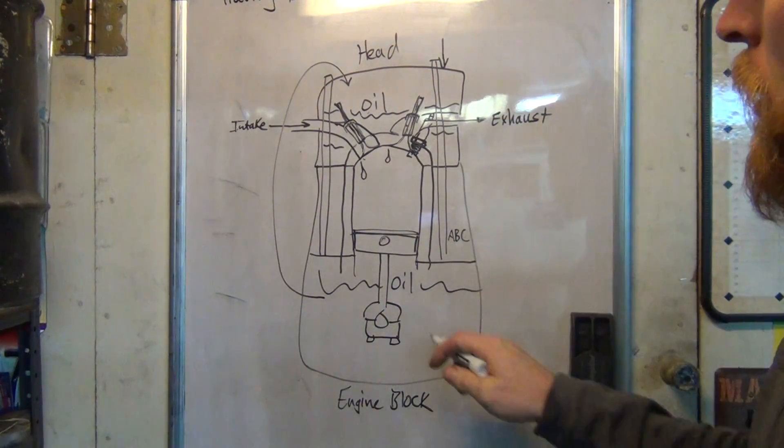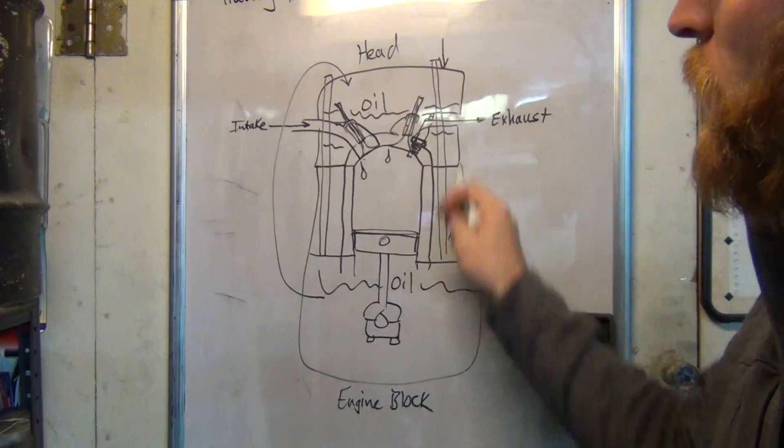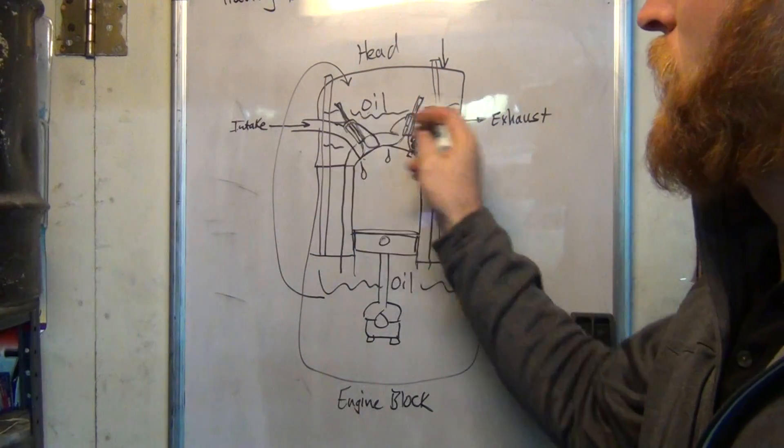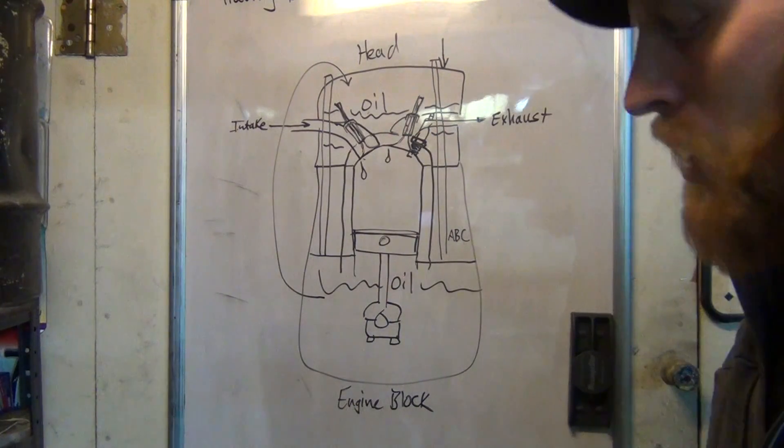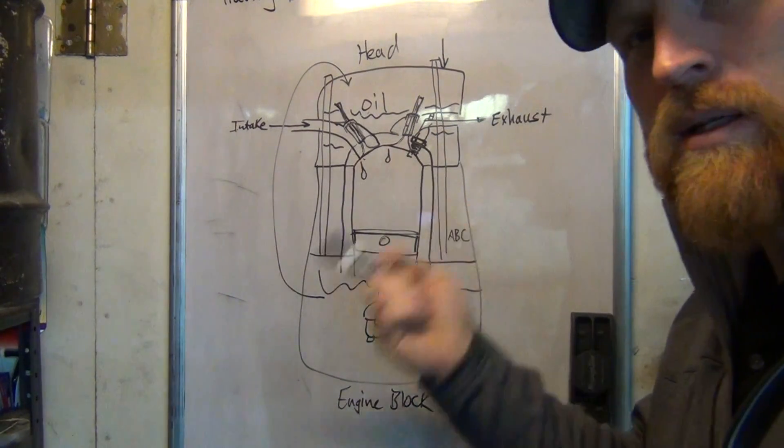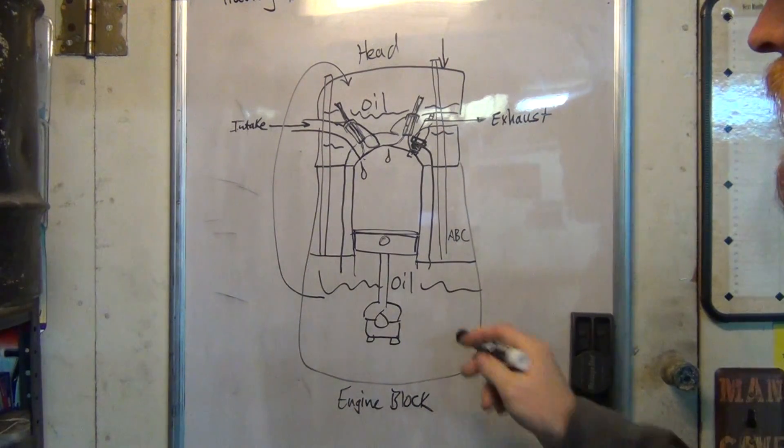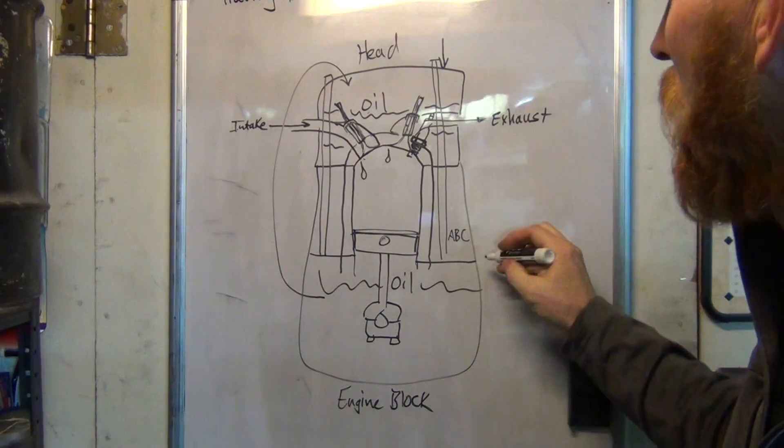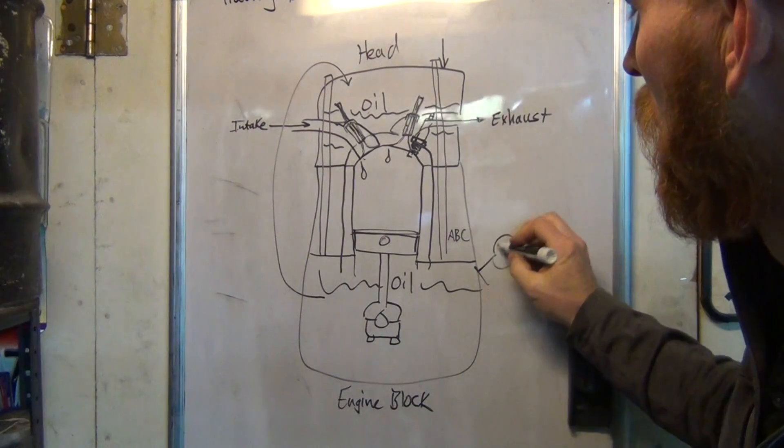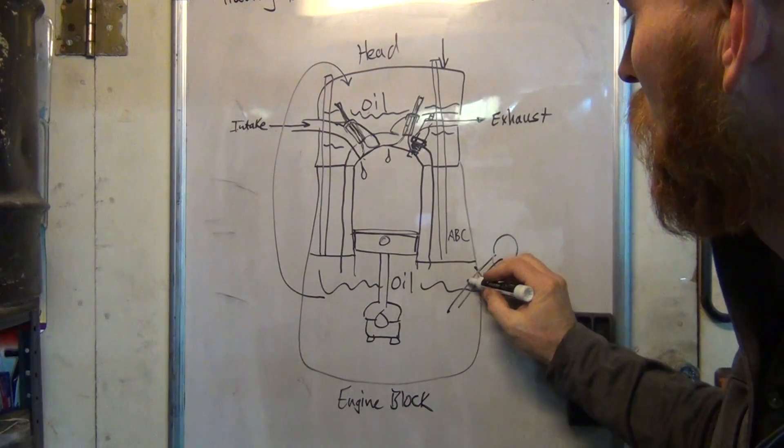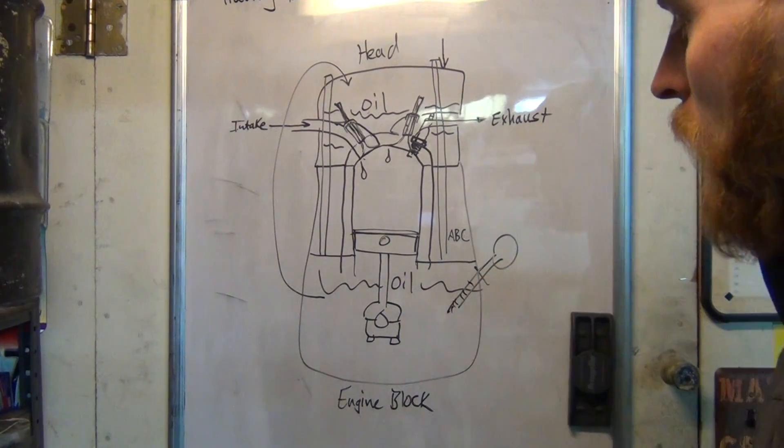So basically you have an oil pump, it pumps oil through the engine so that the top end where the valves are, see the valves I drew there, aren't they great? So that they get lubrication because otherwise there would be a lot of friction and heat and damage. So you've got engine oil down here where your dipstick is and it goes lower and lower and lower when you're burning oil.